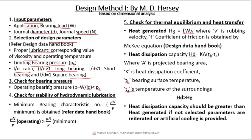The next step is to check for bearing pressure. We calculate the operating bearing pressure as W/LB, and this bearing pressure should be less than the limiting bearing pressure taken from step 2. The next step is to check for stability in hydrodynamic lubrication. As discussed in the friction curve, the bearing should operate in the thick film or hydrodynamic region. For this purpose, we select the minimum bearing characteristic number from the data handbook, then calculate the operating bearing characteristic number. This operating value should be greater than the minimum required bearing characteristic number so that the bearing operates in the stable region.